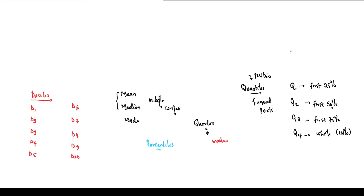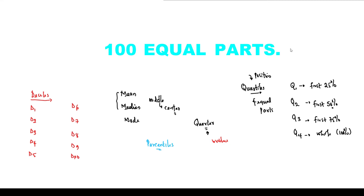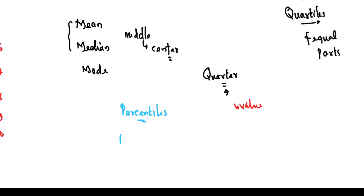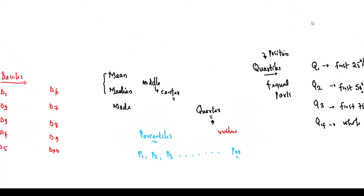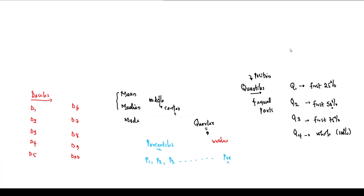We also talk about the percentiles. The percentile actually divides the distribution into 100 equal parts. We have P1, which is the first percentile, P2, P3, and so on, all the way through to P99, which is the 99th percentile.